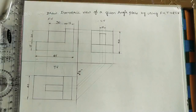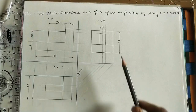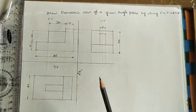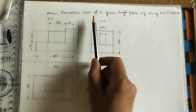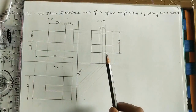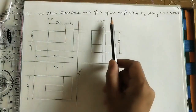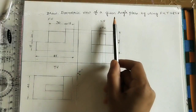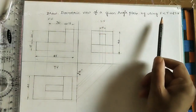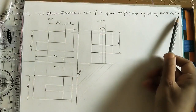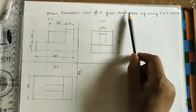Hi friends, welcome to my channel. Let us discuss how to do the isometric view of a given angle plate. Isometric view means a 3-dimensional diagram. We have to do the 3-dimensional diagram by using the front view, top view, and side view of the given angle plate.